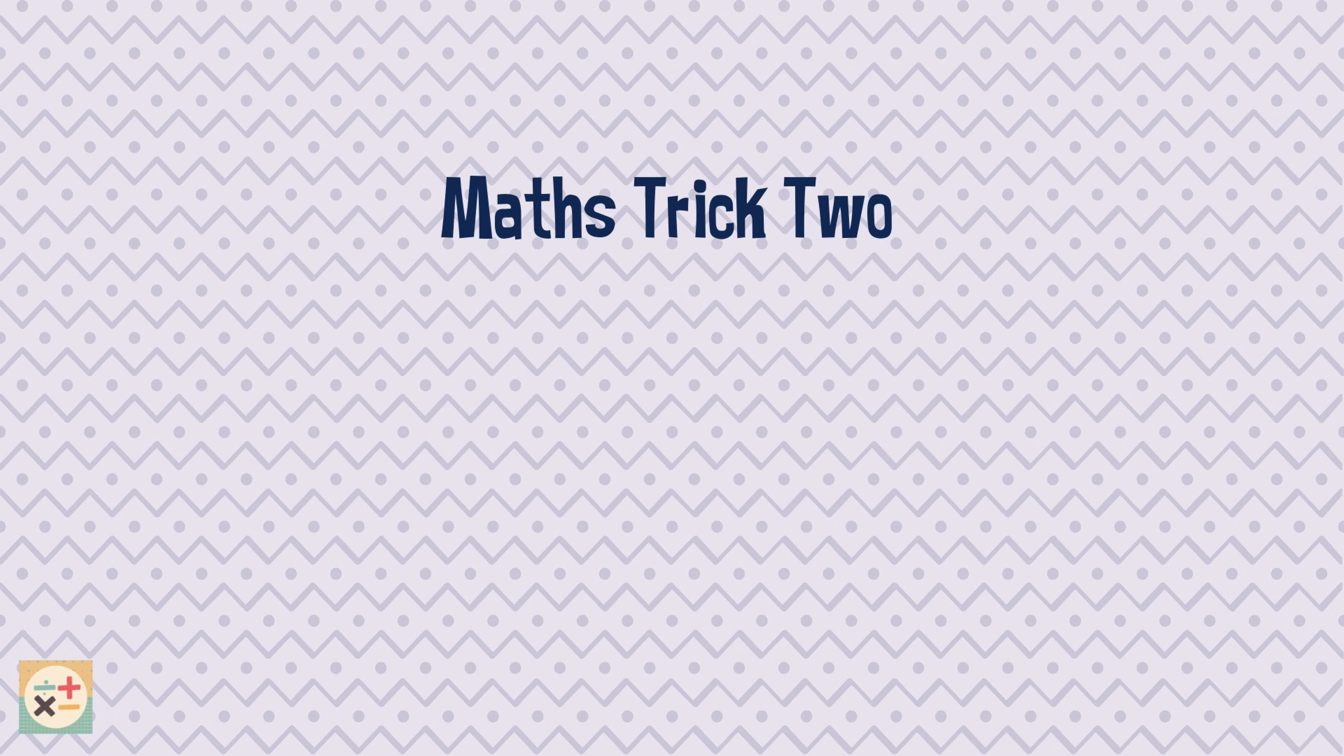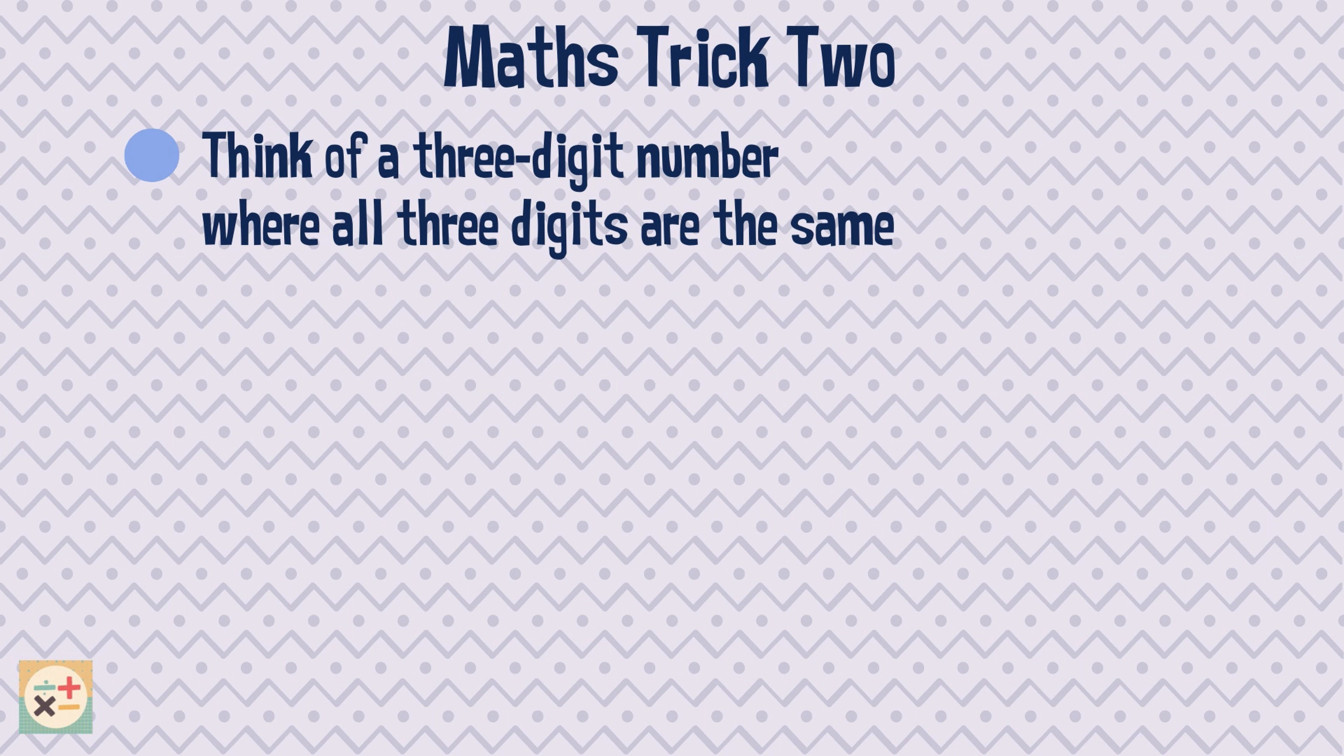Maths trick two. Think of a three-digit number where all three digits are the same. Add up all three digits.